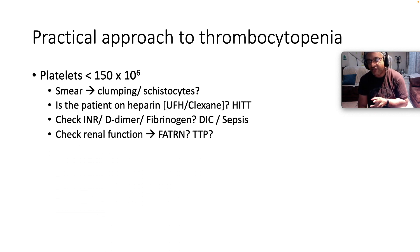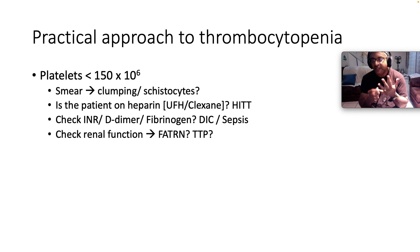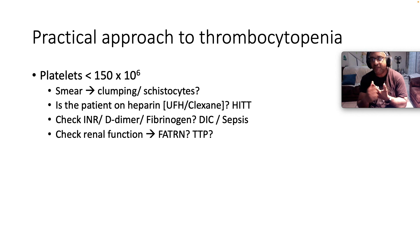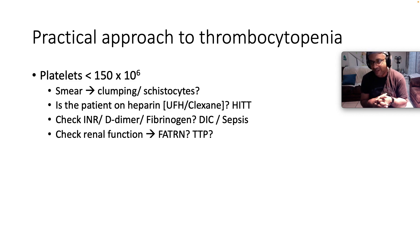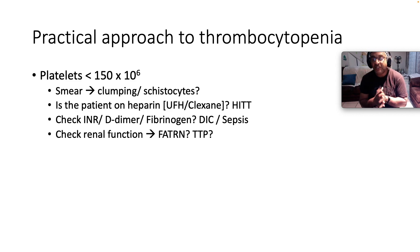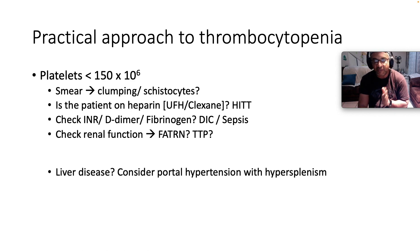Then you want to check your renal function. Remember, the acronym for TTP — thrombotic thrombocytopenic purpura — is FATRN: F is fever, A is anemia, T is thrombocytopenia, R is renal impairment, N is neurological issues. So if the patient has any of those features of FATRN, and the main harbinger is diminished or impaired renal function, you must entertain the possibility of TTP.